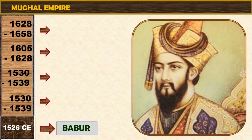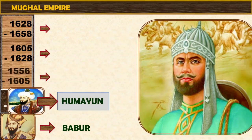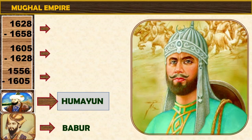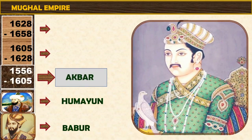Babar came to India in 1526 CE. After Babar, Humayun ascended the throne, reigning from 1530 CE to 1539 CE, and again from 1555 CE to 1556 CE. There was a battle between Akbar and Hemu at Panipat in 1556 CE. This is the Second Battle of Panipat.